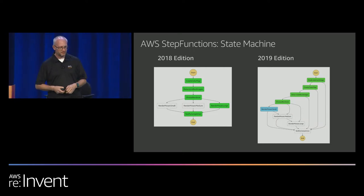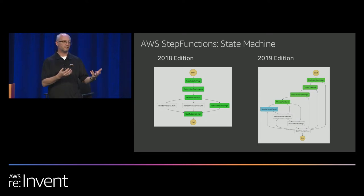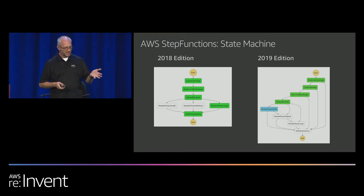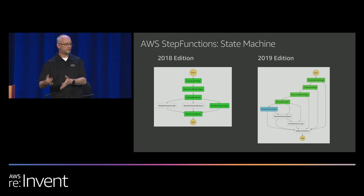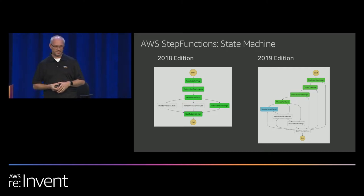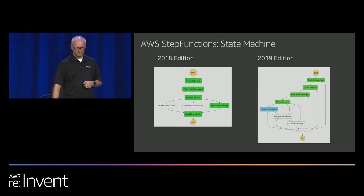We've chained the renderers together now. If the small renderer fails due to running out of memory, the medium renderer will get invoked. If that runs out of memory, the large renderer will be invoked. We also added a Lambda function at the start to call Rekognition to make sure uploaded images were safe to use on screen, since we invited attendees to upload images during the presentation.